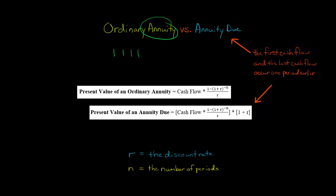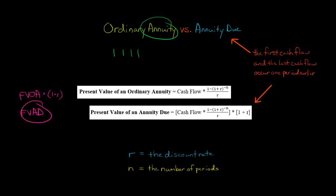This same principle applies when we think about future value. The formula for future value of an ordinary annuity — we just take that and multiply by one plus R, and that gives us the future value of an annuity due.